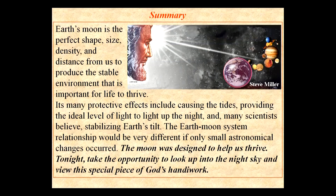In summary, Earth's moon is the perfect shape, size, density, and distance from us to produce the stable environment that is important for life to thrive. Its many protective effects include causing the tides, providing the ideal level of light to illuminate the night, and many scientists believe stabilizing Earth's tilt. The Earth-moon system relationship would be very different if only small astronomical changes occurred. The moon was designed to help us thrive.